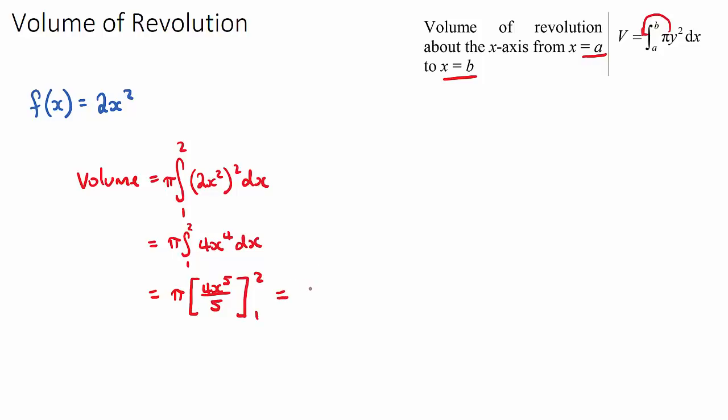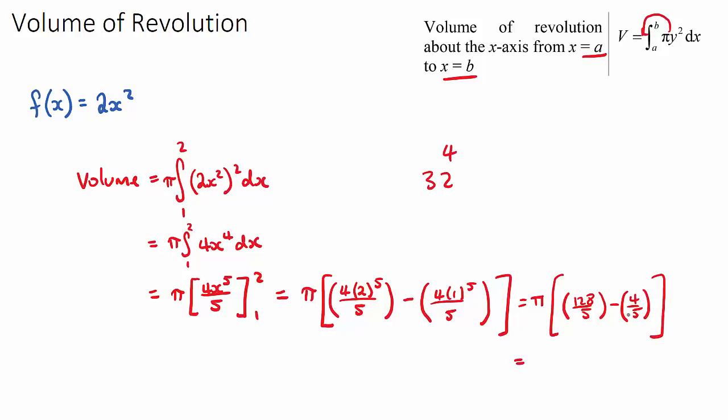Now there'll be some fractions here but let's just work our way through it. We'll have pi. Now we sub in our 2 first so it will be 4 times 2 to the 5 over 5, subtract 4 times 1 to the 5 over 5. And the pi will multiply by whatever this gives us. Now 4 times 2 to the power of 5 is 32, 32 times 4, this will be 128. So 128 over 5. And then we subtract, and 4 times 1 to the power of 5 is just 4, so 4 over 5. So as a fraction we're going to get 128 minus 4 over 5, so 124 over 5. And we have our pi. So 124 pi over 5. And this would be the answer if we did not have a calculator.